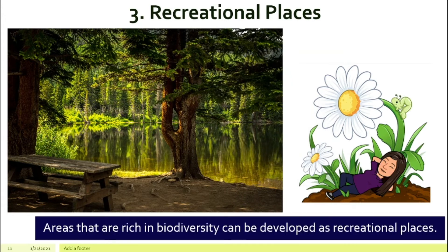Number three, the areas where we have very rich biodiversity, we can develop them into recreational places. For example, Jeku Teo lives in Penang. We have a botanical garden. Many people like to go there for a walk and to relax. You can enjoy many different types of plants.